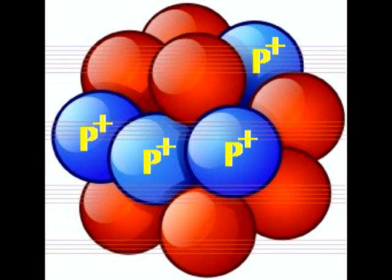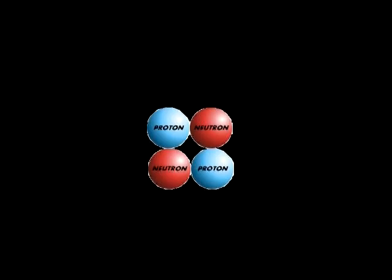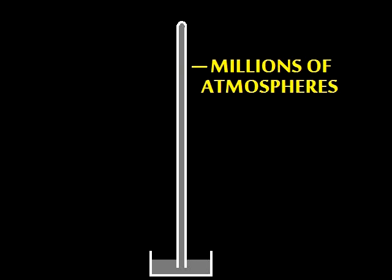Nuclei have protons and are thus positively charged, so they repel each other, especially when they're large. To get the nuclei to come together, you will need high temperature and pressure like the sun.